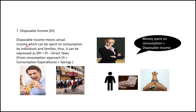Finally, Disposable Income is the actual income which can be spent on consumption. DPI equals Personal Income minus direct taxes. Disposable income can be used for consumption or savings, so the formula is: Disposable Income equals Consumption plus Savings. Until then, take care, happy learning, bye!